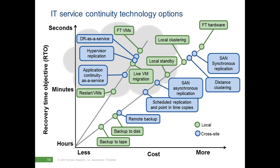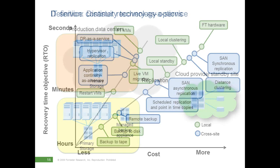There are also more local-type technologies for what you'd traditionally think of as high availability — like fault-tolerant VMs and live VM migration — all coming at a much lower cost than in the physical world.